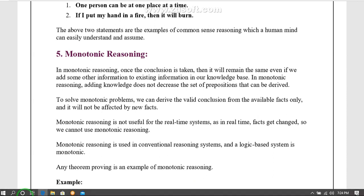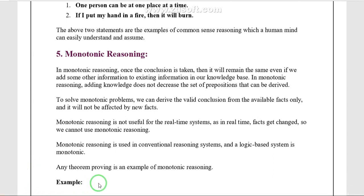If we want to conclude any statement, that conclusion is already present to solve the problem. The method of monotonic reasoning consists of complete, unchanging, and certain facts. Whatever the premises we take, those facts remain unchanged and form the final conclusion.